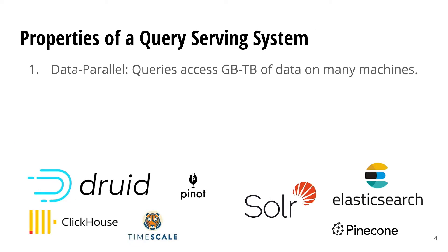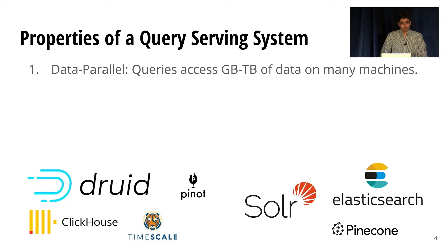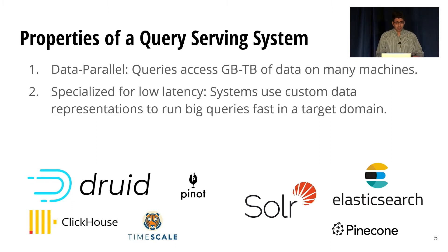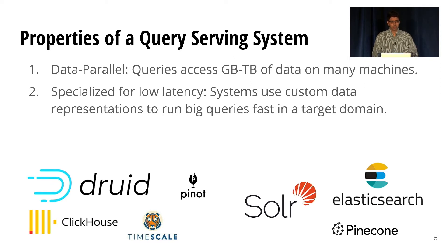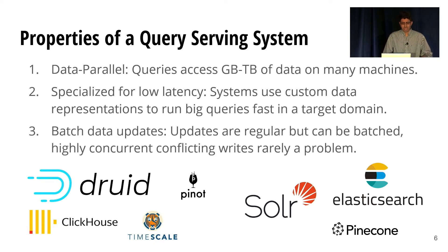We think there are three core properties of a query serving system. First, their queries are data parallel, and an individual query can access gigabytes to terabytes of data on many machines. Second, these systems are specialized for low latency — they use custom data representations to run big queries fast in a target domain. For example, a text search system like Solr uses custom inverted indexes to run text search queries very fast. And third, they typically have batch data updates, where updates are regular but can be batched, so highly concurrent conflicting writes are rarely a problem.